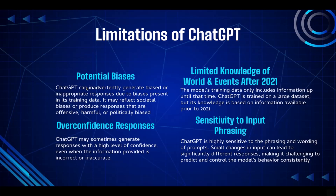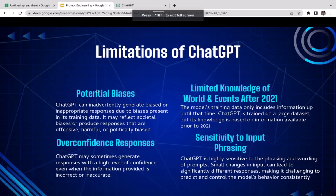The first limitation is potential biases. ChatGPT can inadvertently generate biased or improper responses due to biases present in its training data. It may reflect societal biases or produce responses that are offensive, harmful, or politically biased. ChatGPT has a large pre-trained dataset, and the larger the dataset, the more bias it can potentially introduce. That's just a consequence we all need to accept.